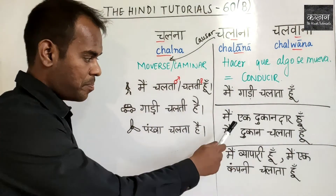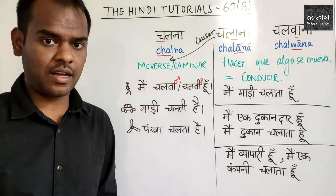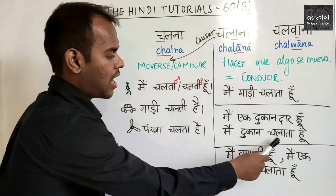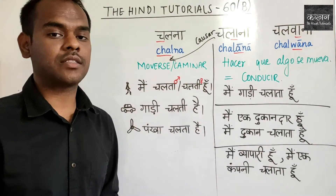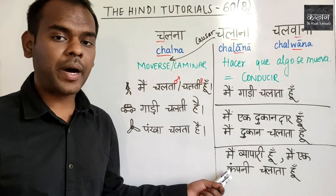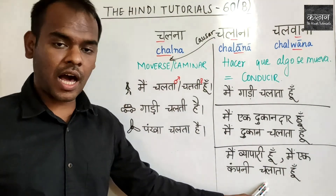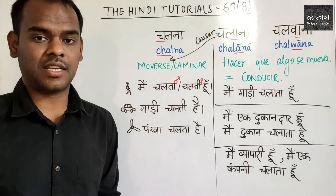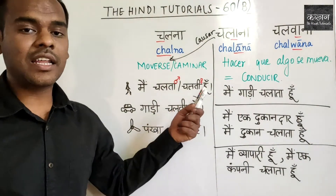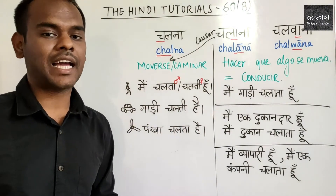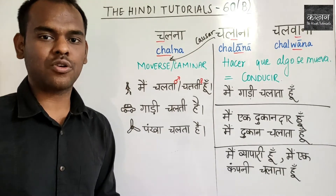El verbo chalana también se usa en otro contexto. Me eek dukán dar hun — soy un tendero, un dueño de una tienda. Me dukán chalata hun — yo dirijo una tienda. Me veapari hun — soy empresario. Me eek company chalata hun — yo dirijo una empresa. O me eek company chalati hun, si es una mujer.